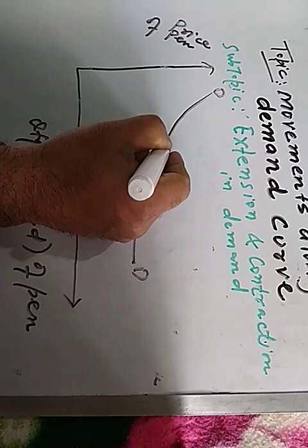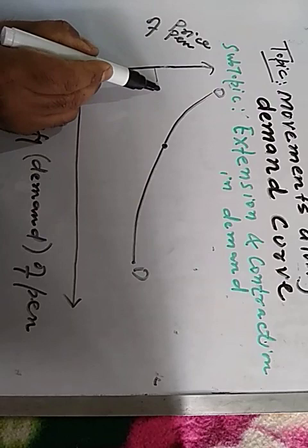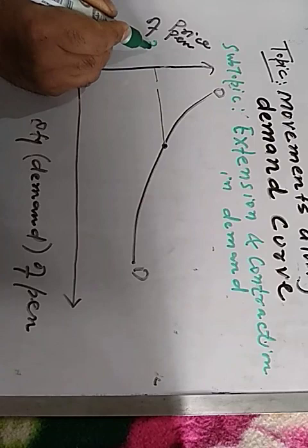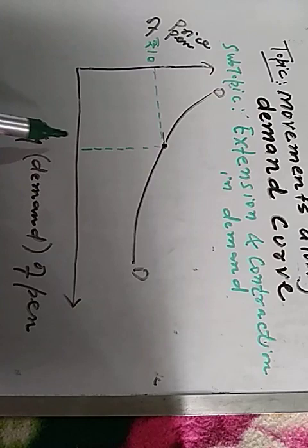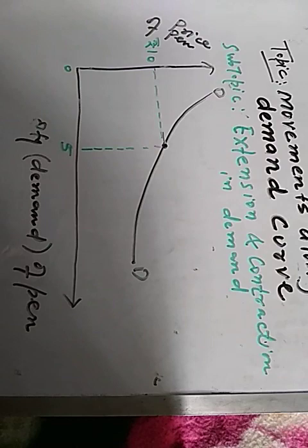Now let us take the initial price of a pen as 10 rupees, at which the demand of a pen was supposed to be 5 units. This is the initial demand and this is the initial price — let us call this point A.